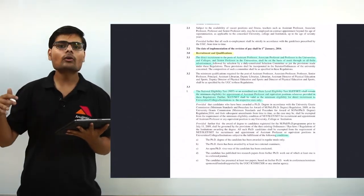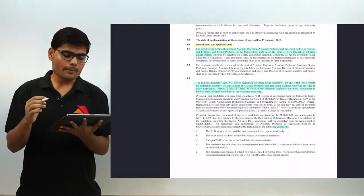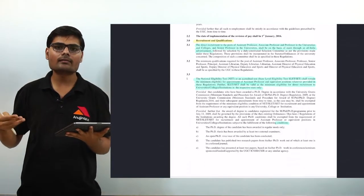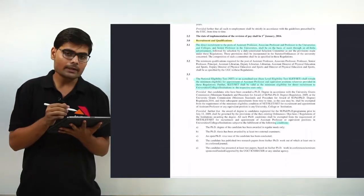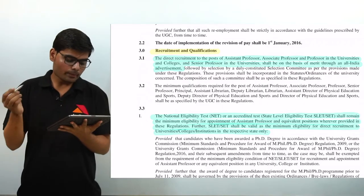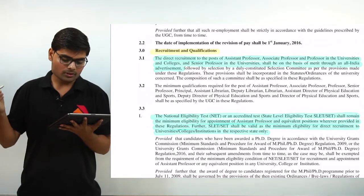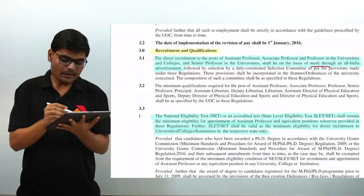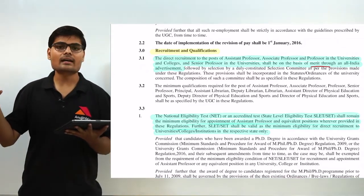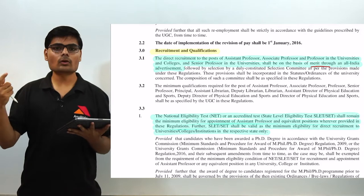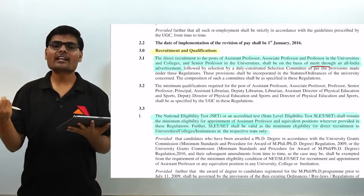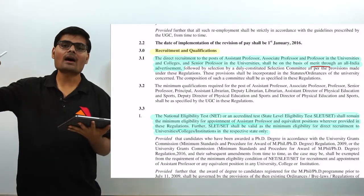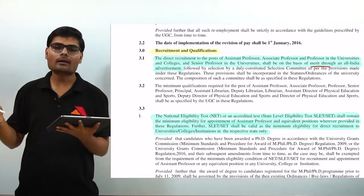The recruitment and qualification point covers what qualifications and experience are required for recruitment. Clause number 1 says the direct recruitment for the post of assistant professor, associate professor and professor in universities and colleges shall be based on merit. Basically, merit means your qualification — what are your marks, what is your percentage of marks. All these are counted in the merit.